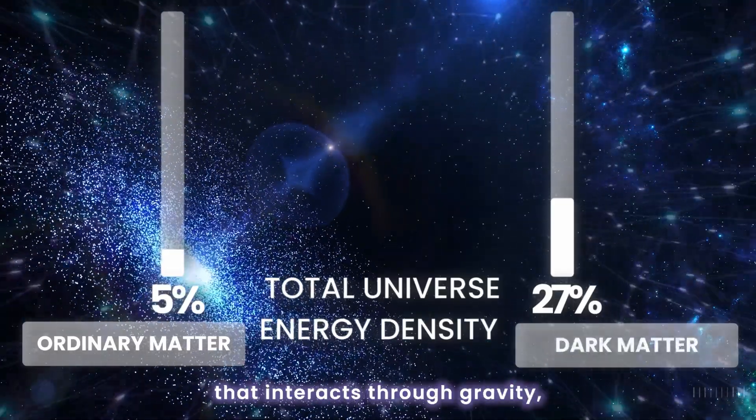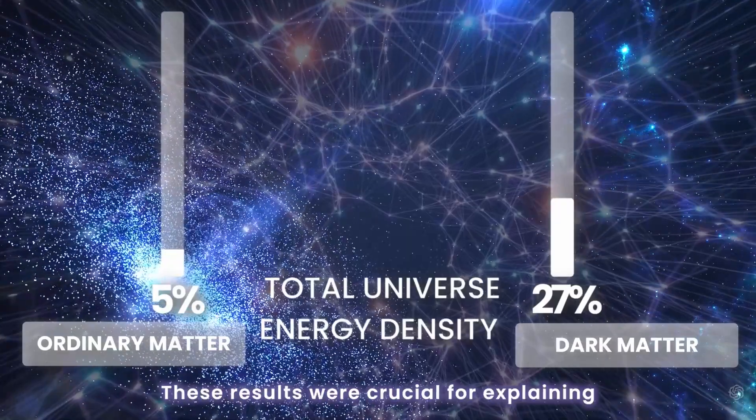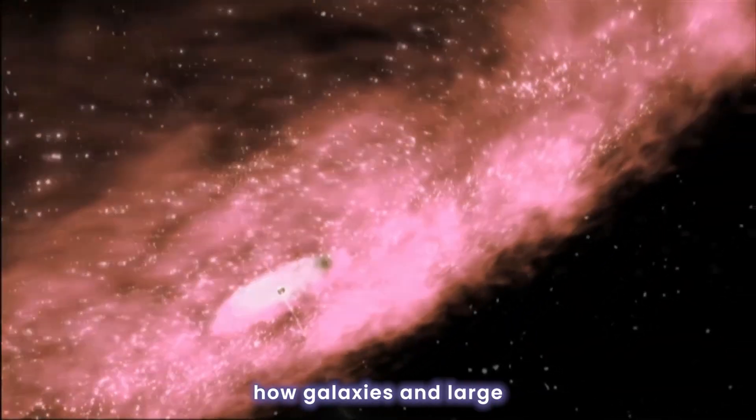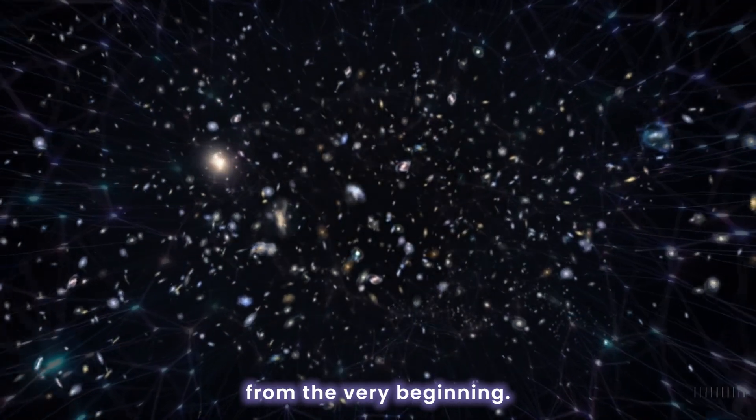Around 27% must be an unknown form of matter that interacts through gravity, but not with light, what we call dark matter. These results were crucial for explaining how galaxies and large-scale structures formed, showing that dark matter was present from the very beginning.